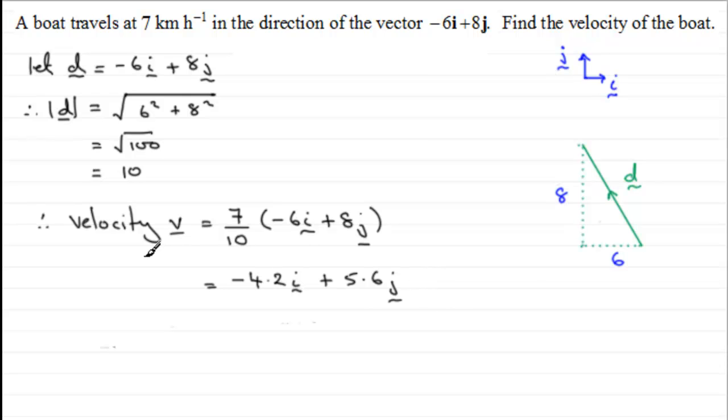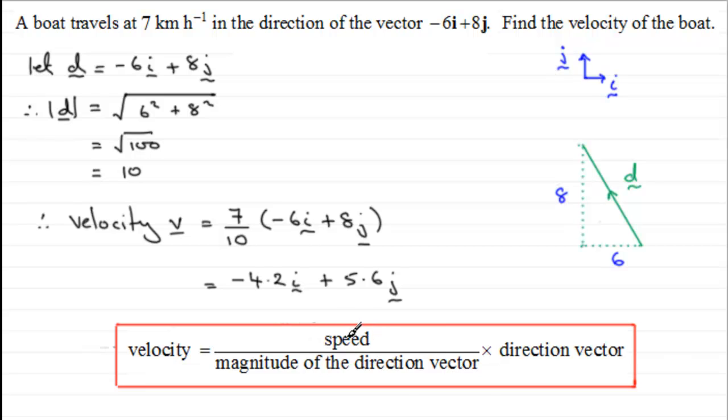So in summary, to get the velocity vector, all I'm doing is comparing the speed with the magnitude of the direction vector—that's the length across here. That will tell me what fraction I've got to have of the direction vector. Speed over the magnitude, 7 tenths of the direction vector. So I hope that gives you an idea then how we go about this kind of problem.